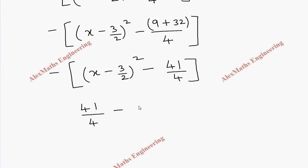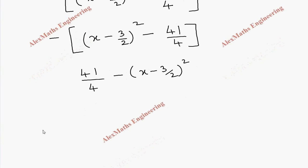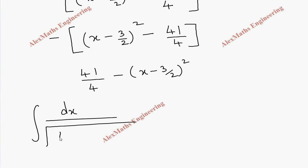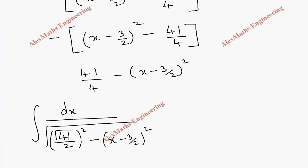Substituting this in the integration, we have integral dx by root of 41/4 minus (x − 3/2)². Now 41/4 can be written as (√41/2)², so this is of the form a² − x² where a = √41/2 and x is replaced by (x − 3/2). We have a formula for this.